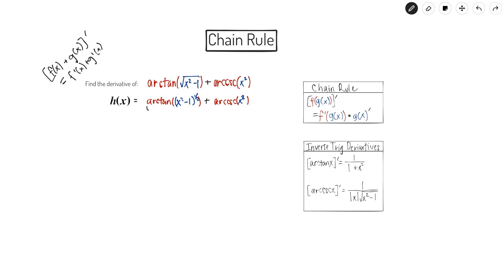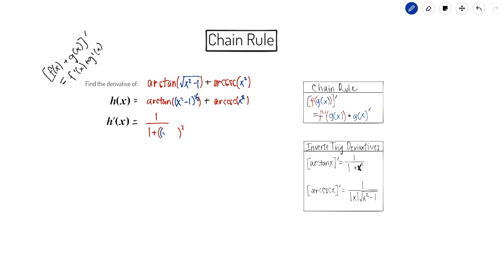I want to find the derivative of the outer function. The derivative of arctangent is one over one plus x squared. But I'm not going to write one over one plus x squared directly — I need to plug in the inner function for x. So this is going to be one over one plus whatever we're plugging in, squared. And what are we plugging in? We're plugging in the inner function. All of that times the derivative of the inside.